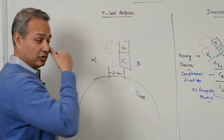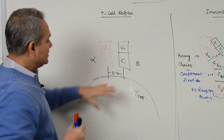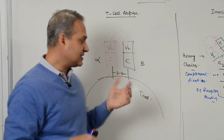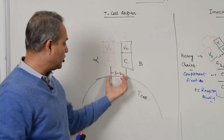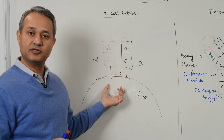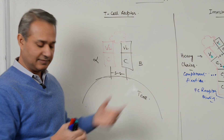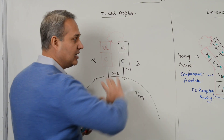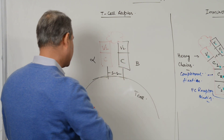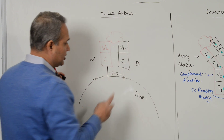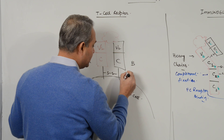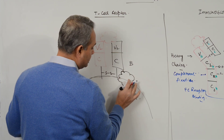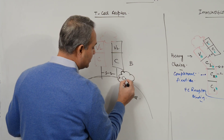The T cell receptor does not have a true constant region. Instead, the constant region is a very small, short piece which is connected into the cell membrane of the T cell. T cell receptor is combined with the CD3 complex — this is a very important concept.